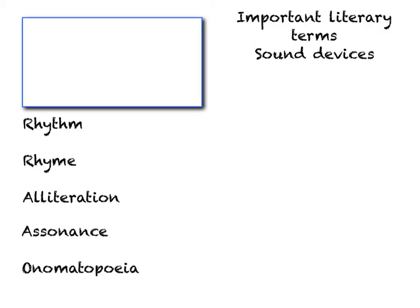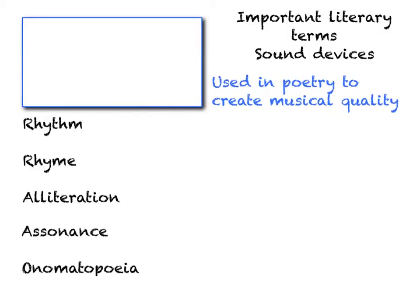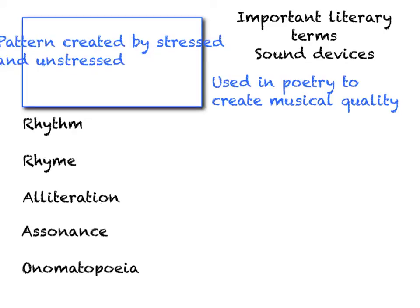The second category of literary terms we need to know are sound devices. Sound devices are used in poetry to create musical quality. First up is rhythm — the pattern created by stressed and unstressed syllables, usually used in a sequence.